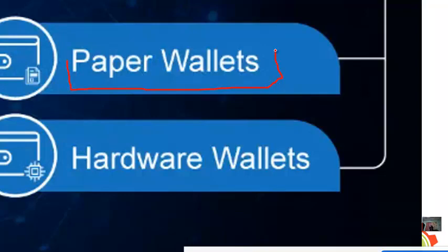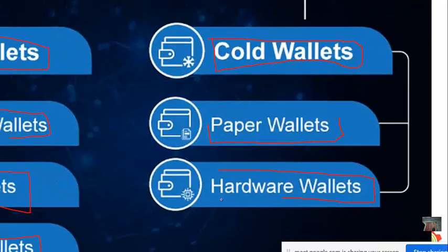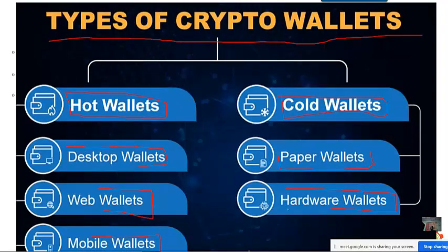Paper wallets are still in operation but not very common. Under the category of cold wallets, we also have hardware wallets. So the two types of crypto wallets are hot wallets — with desktop, web, and mobile sub-types — and cold wallets — with paper wallets and hardware wallets.